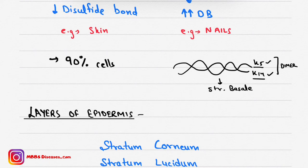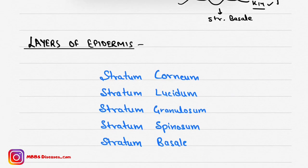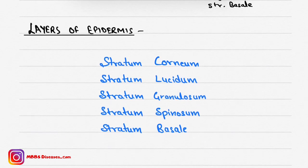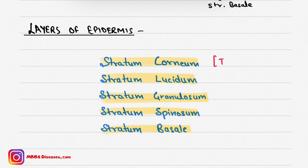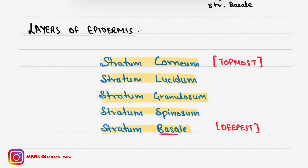We should know the layers of the epidermis. There are five layers: stratum corneum, stratum lucidum, stratum granulosum, stratum spinosum, and stratum basale. Stratum corneum is the topmost layer of the epidermis, while stratum basale is the deepest layer — it sits at the base, with corneum on top.